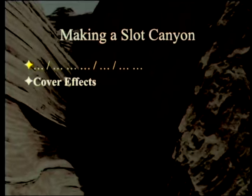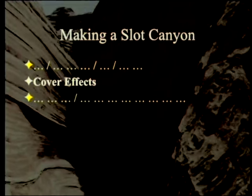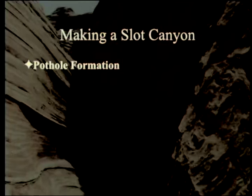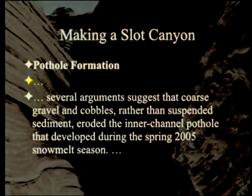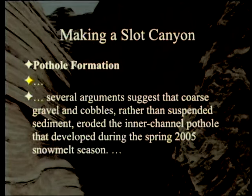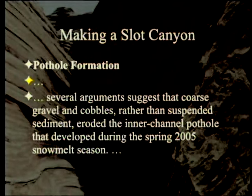Cover effects: the flash flood bore has so much material that it starts dumping it into holes rather than gouging them out. Regarding pothole formation, several arguments suggest that coarse gravel and cobbles rather than suspended sediment eroded the inner channel pothole that developed during the spring 2005 snowmelt season. Apparently it's not just water pouring in — it's also water trapping a few rocks temporarily, which grind away in a circular motion.